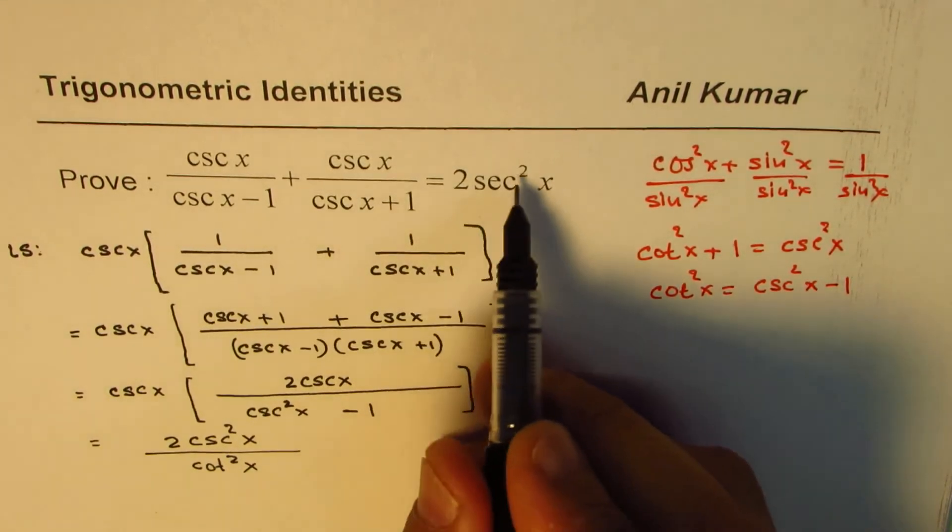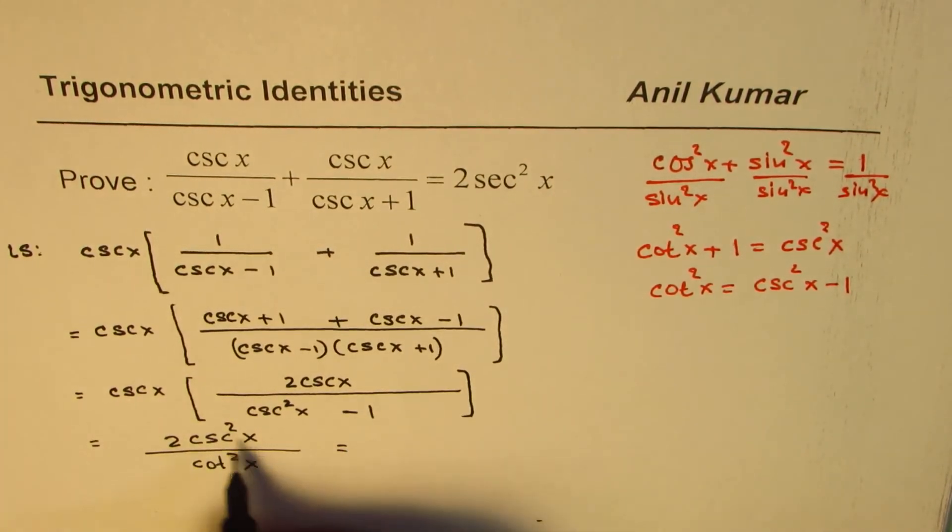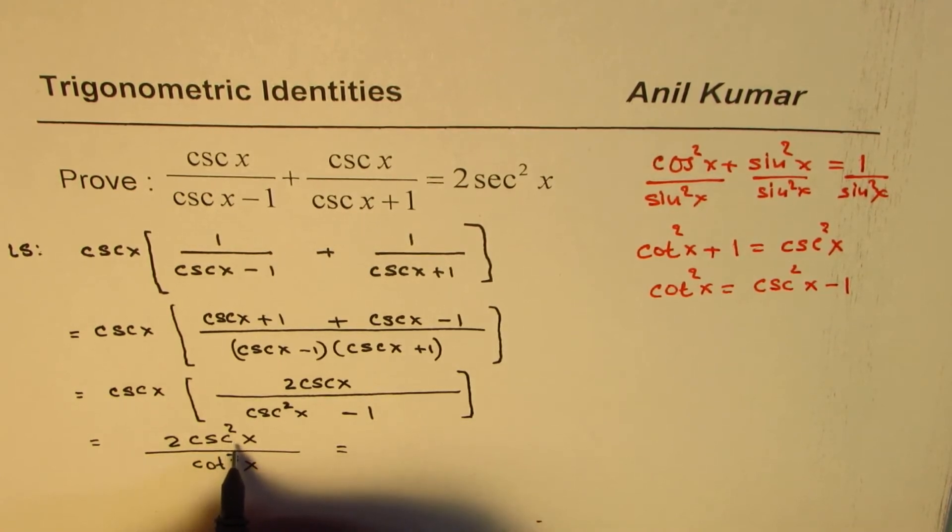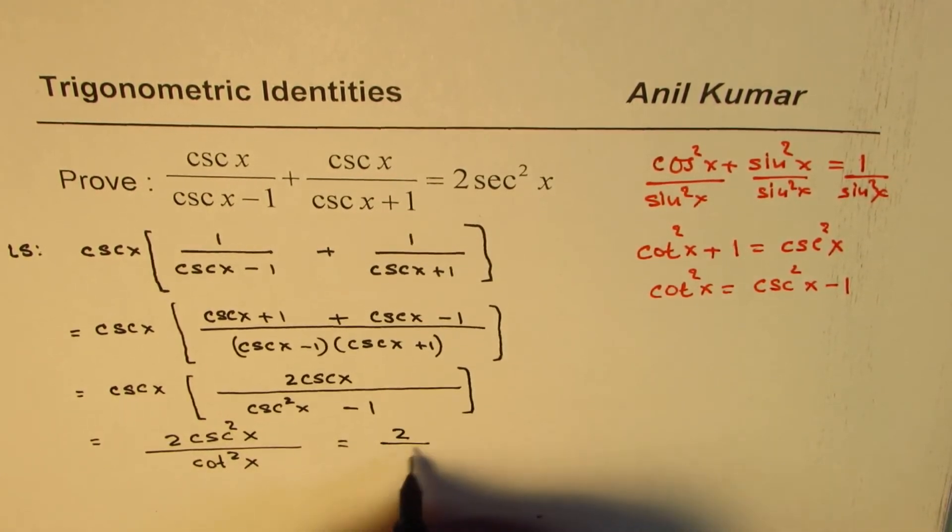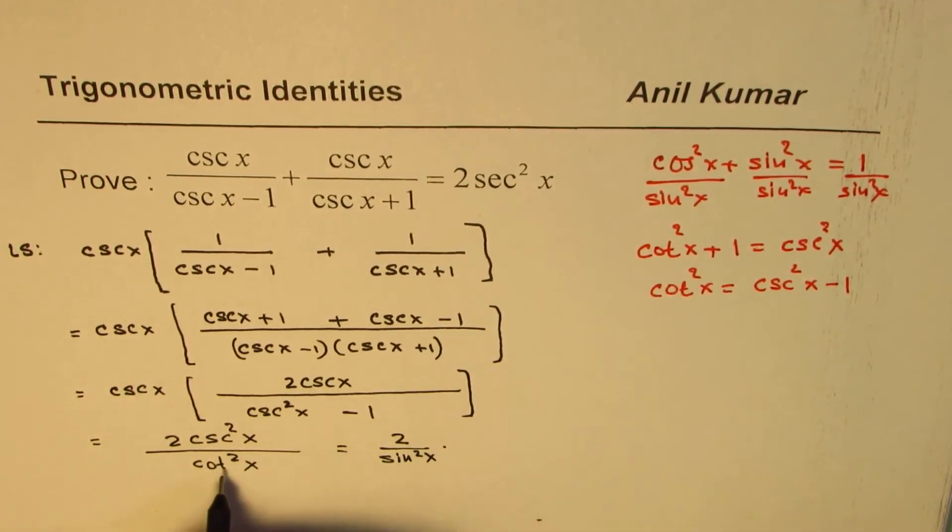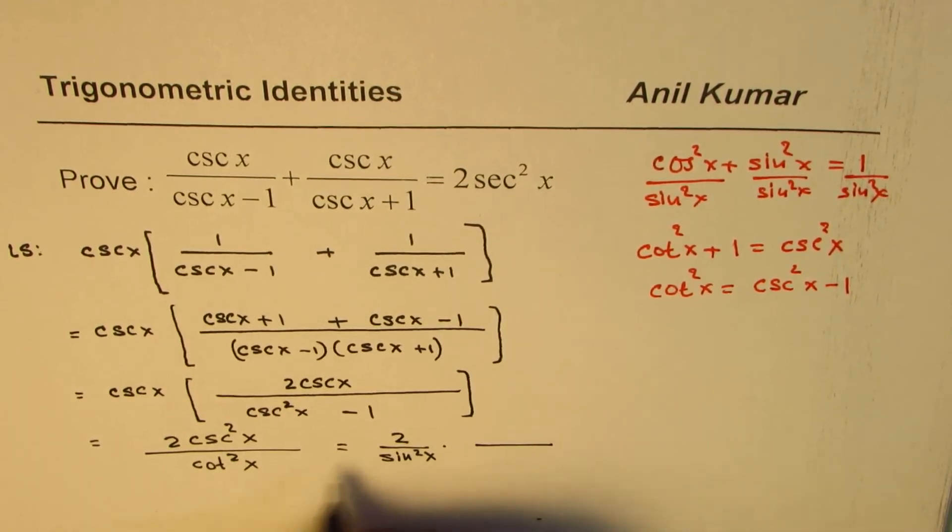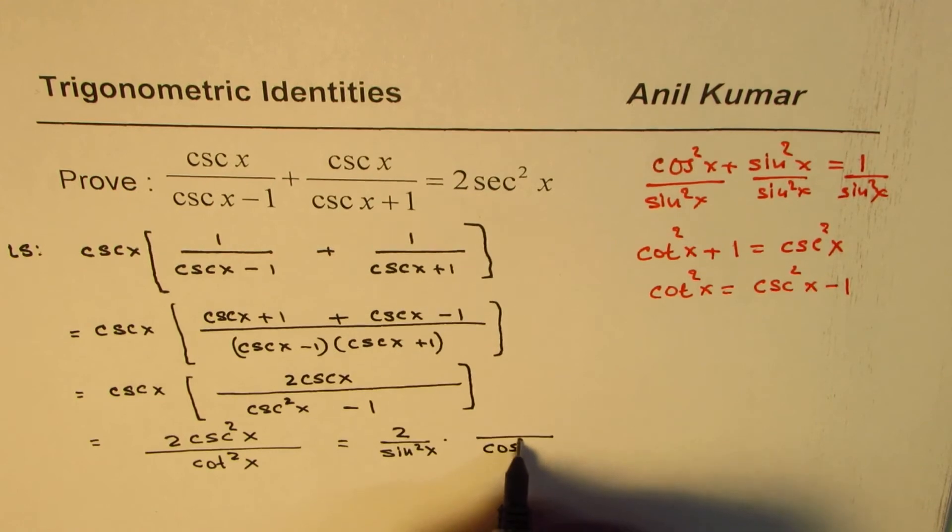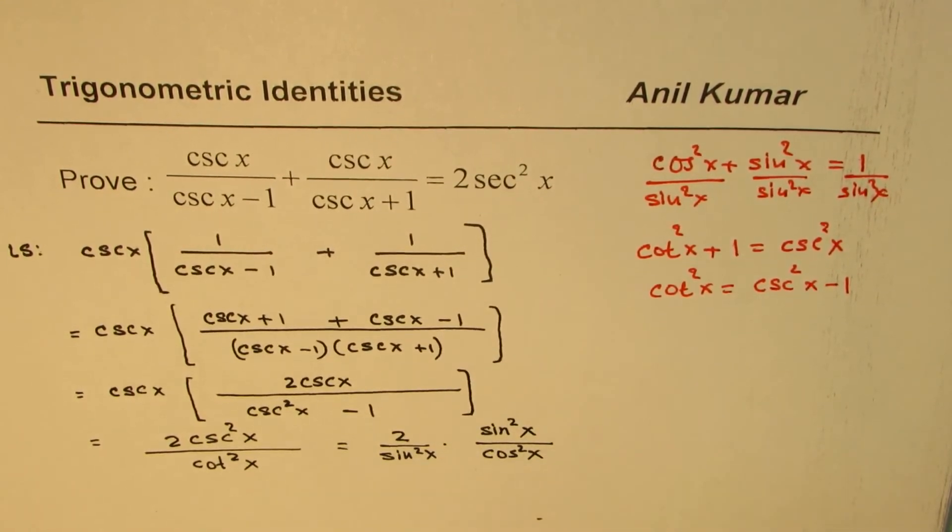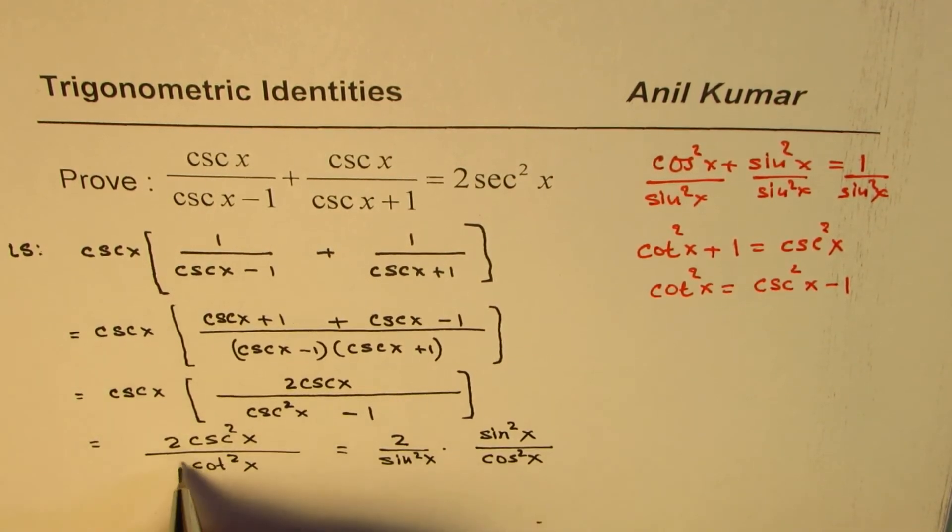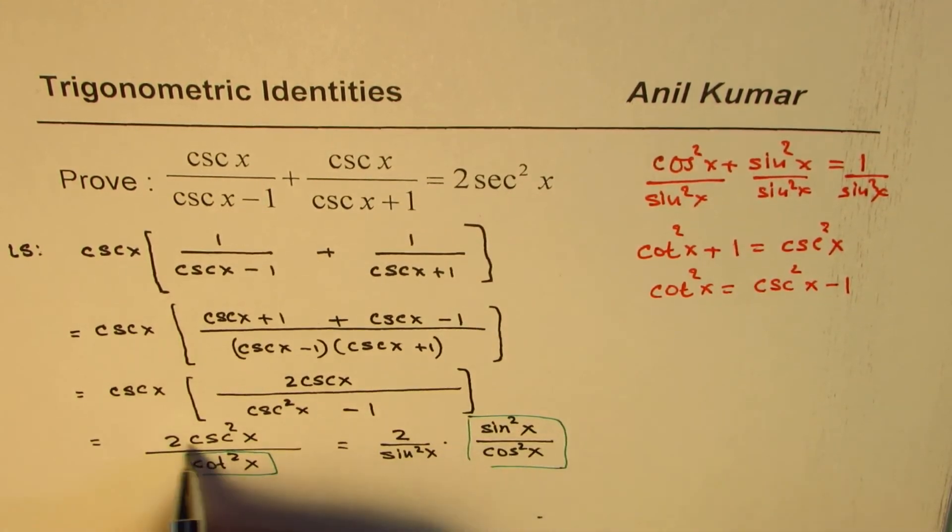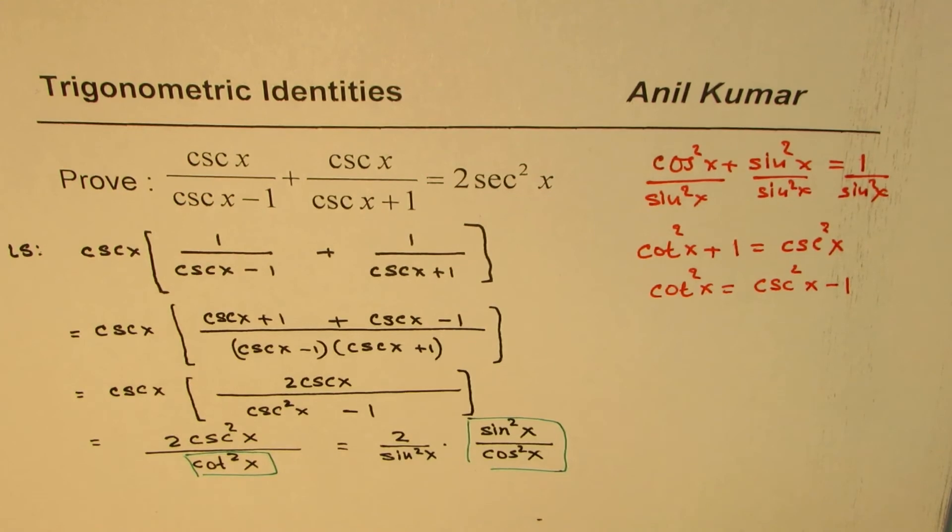Now, we want to show that this is 2 secant square x. So, let me write them in terms of sine and cosine. Cosecant is 1 over sine square x. We get 2 over sine square x. And the cot square x is cos square x over sine square x. So, we wrote this cot square x, 1 over cot square x as this part, and 2 cosecant square x as 2 over sine square x.